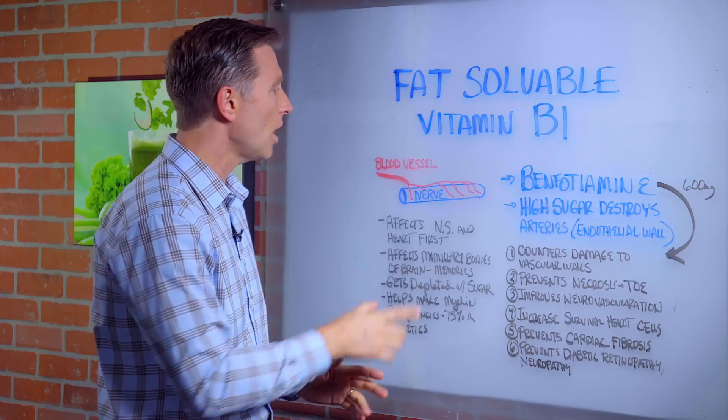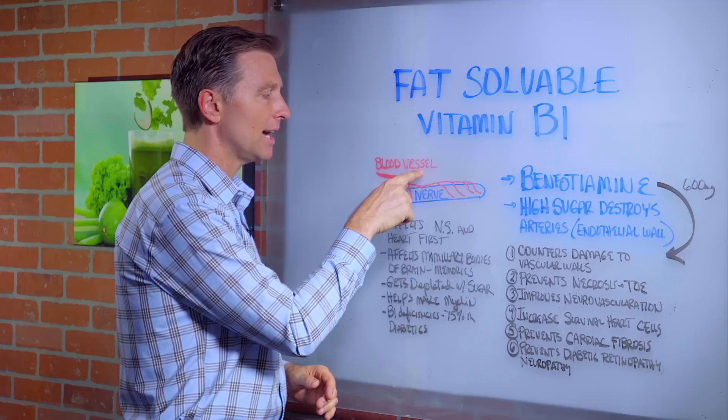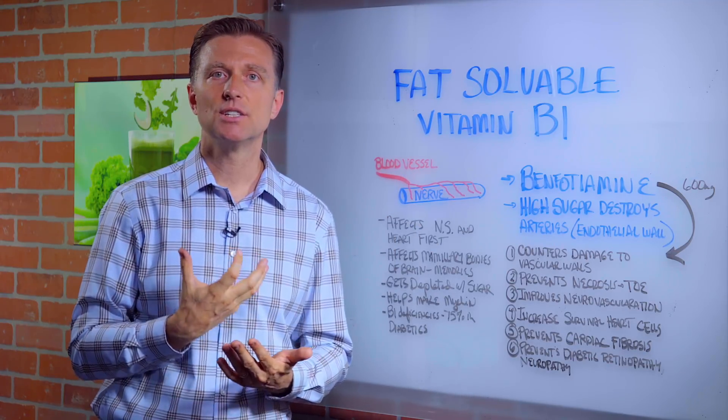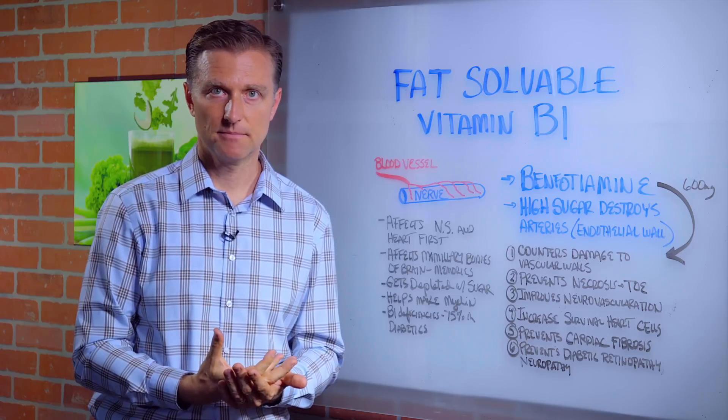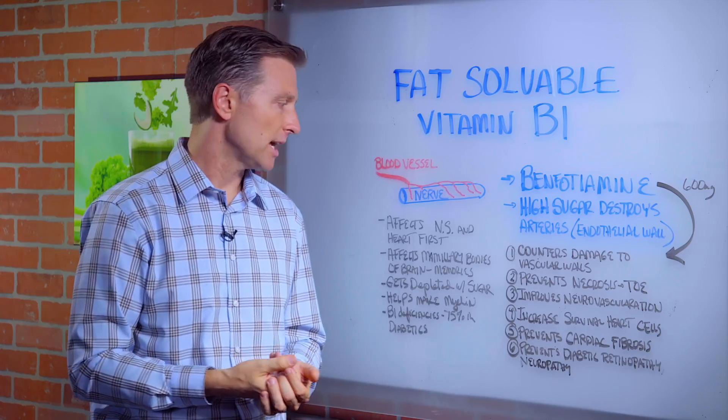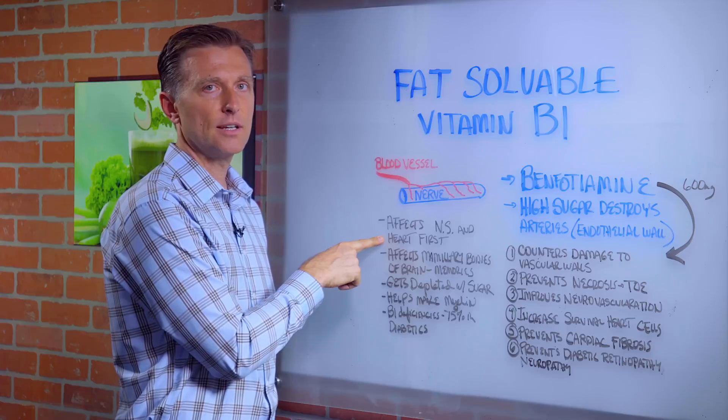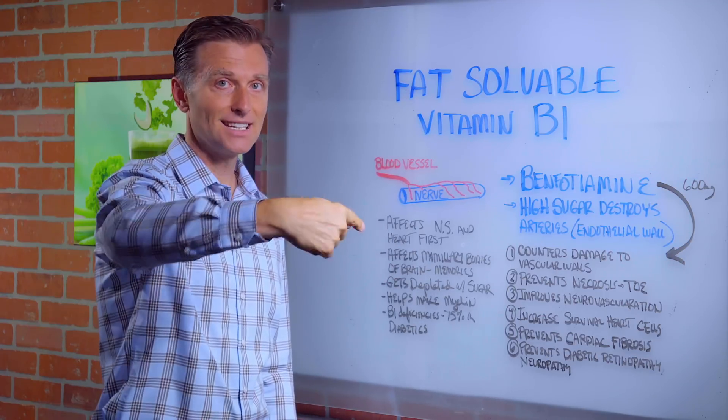So when you don't get blood supply to the nerve, it decreases the oxygen to the nervous system. And then you start getting all sorts of problems with that. So vitamin B1 deficiencies affect the nervous system and the heart first, especially the nerves that connect to the heart.